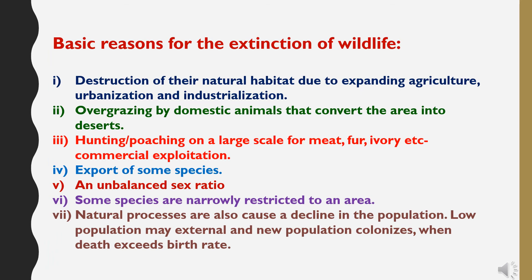What are the basic reasons for the extinction of wildlife? First, destruction of their natural habitat due to expanding agriculture, urbanization and industrialization. Second, overgrazing by domestic animals that converts the area into deserts. Third, hunting or poaching on a large scale for meat, fur, ivory, etc. as commercial exploitation. Fourth, export of some species. Fifth, an unbalanced sex ratio. Sixth, some species are narrowly restricted to an area. Seventh, natural processes also cause a decline in population — low population may lead to extinction when new populations do not colonize and death rate exceeds birth rate.